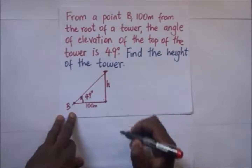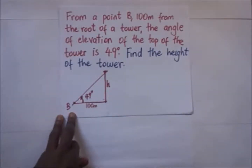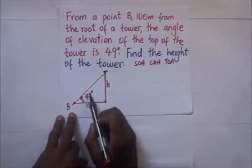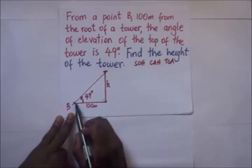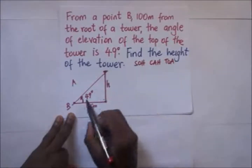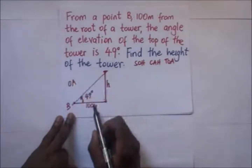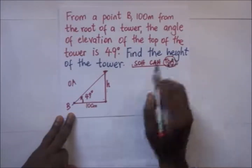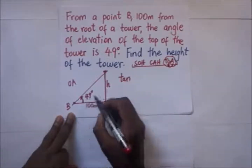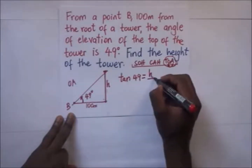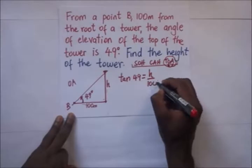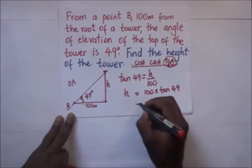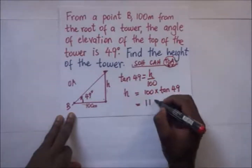We are required to find the height of the tower, and we are going to use trigonometry. Looking at this angle, it has a length adjacent to it and the height h is opposite. Since we have opposite and adjacent, we use tan. So tan(49°) = opposite over adjacent = h over 100. Making h the subject: h = 100 × tan(49°). When we compute that, we get our answer as 115 meters.